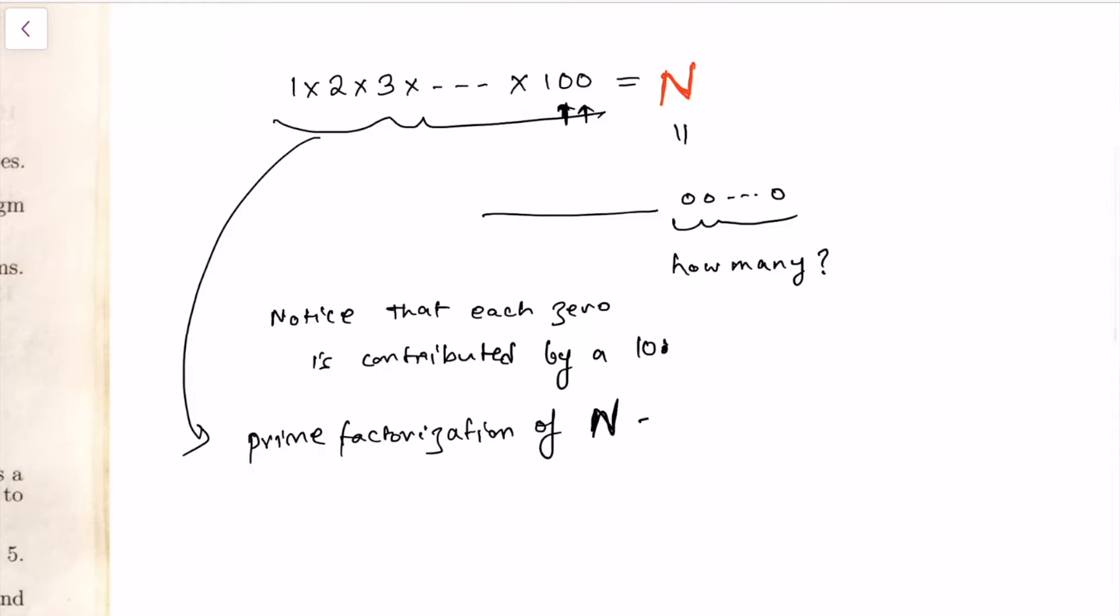Prime factorization of this huge number, capital N, will have some power of two in it. Of course there is at least one two, and then four will contribute two more twos. Like this, there will be several twos in this product. So let's suppose 2 to the power k1 times 5 to the power k2, some power of 5, and of course there will be other primes also in this prime factorization.